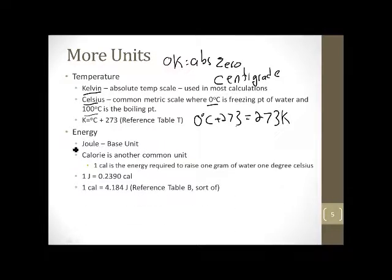Last but not least, energy. The base unit in SI for energy is the joule, and it's related to the calorie. When you think of calories in your food, those are actually kilocalories, but it's energy, the amount of energy you're going to get out of your food. One calorie is the energy required to raise one gram of water one degree Celsius. One joule is equal to 0.2390 calories. One calorie is equal to 4.184 joules, and that's in reference table B of your reference tables. If you need to go back and review anything, by all means, feel free to do so, and I'll see you guys in school.